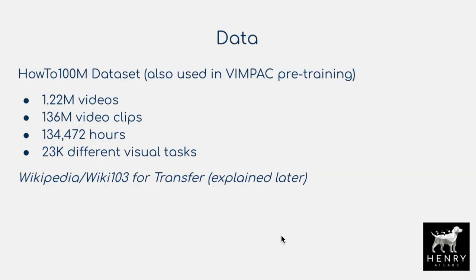One essential detail to deep learning experiments is the dataset. For pre-training with video data, they use the HowTo100M dataset — about 1.2 million videos, 136 million video clips making up 134,000 hours of video at 30 frames per second, containing 23,000 different visual tasks. For the knowledge distillation transfer, they use Wikipedia Wiki103 for distilling language representations. This video pre-training dataset is also used in the VIMPAC algorithm.